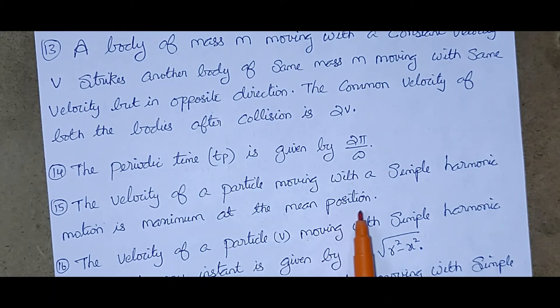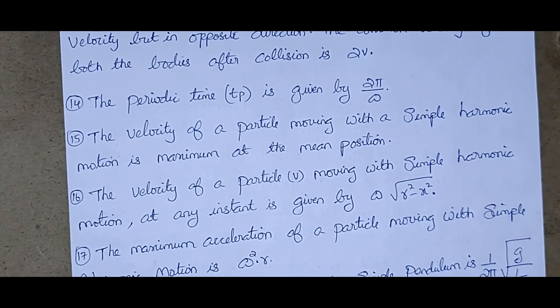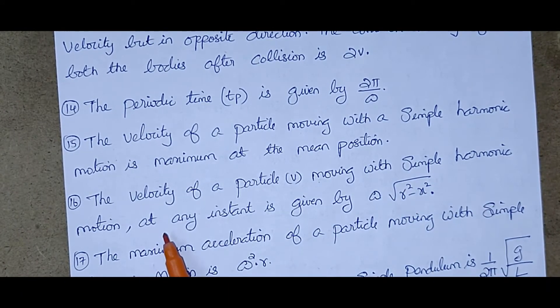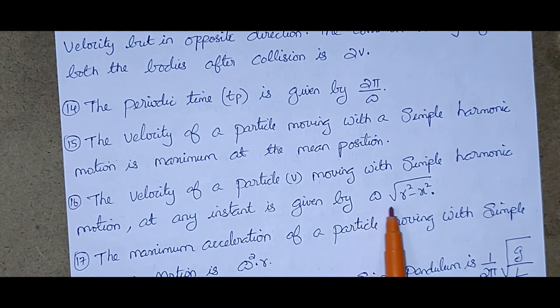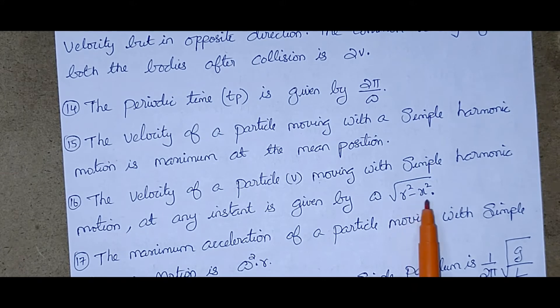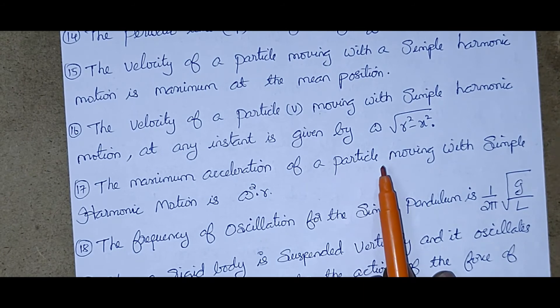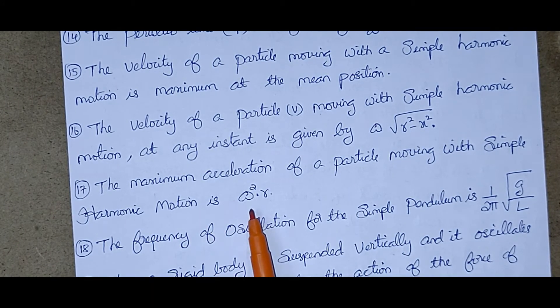The velocity of a particle moving with simple harmonic motion is maximum at the mean position. The velocity of a particle moving with simple harmonic motion at any instant is given by omega into root R square minus X square.